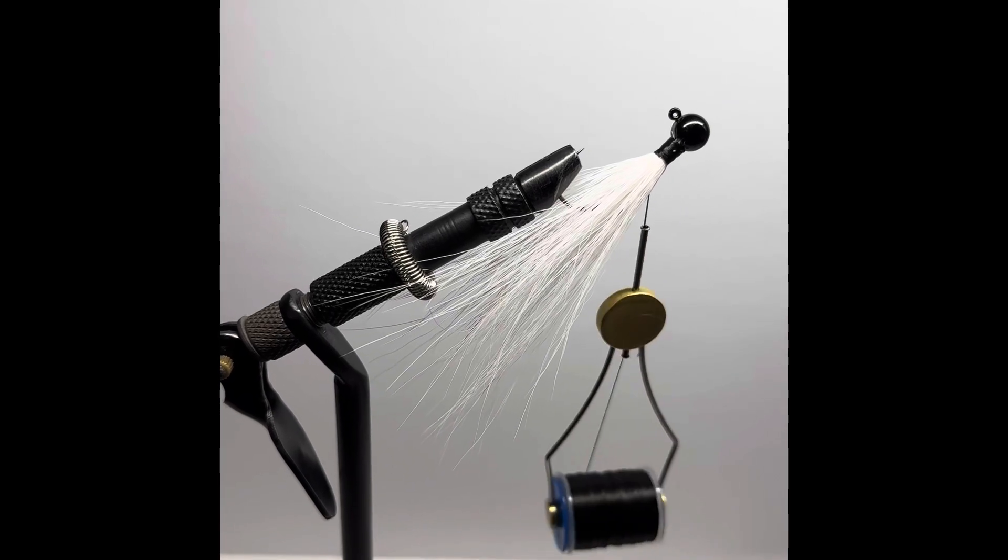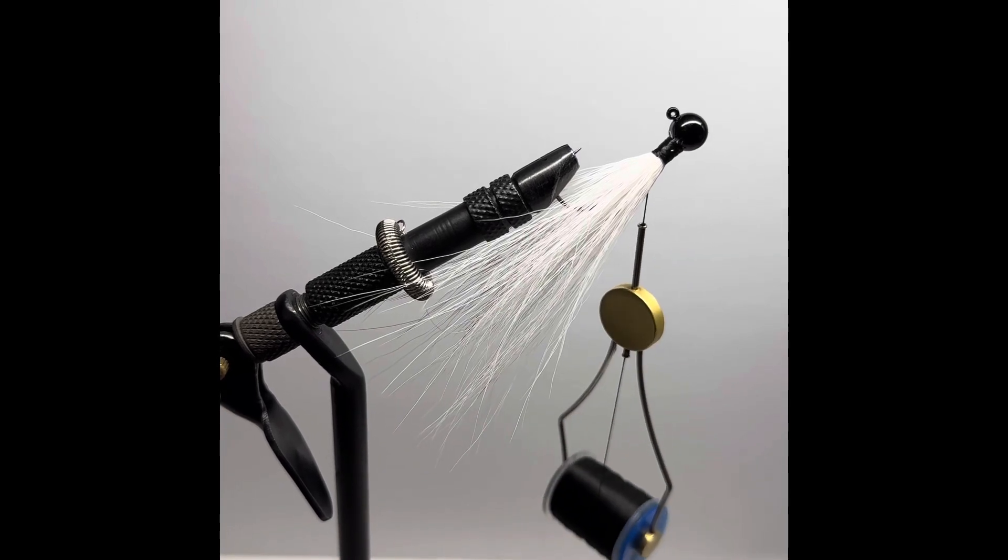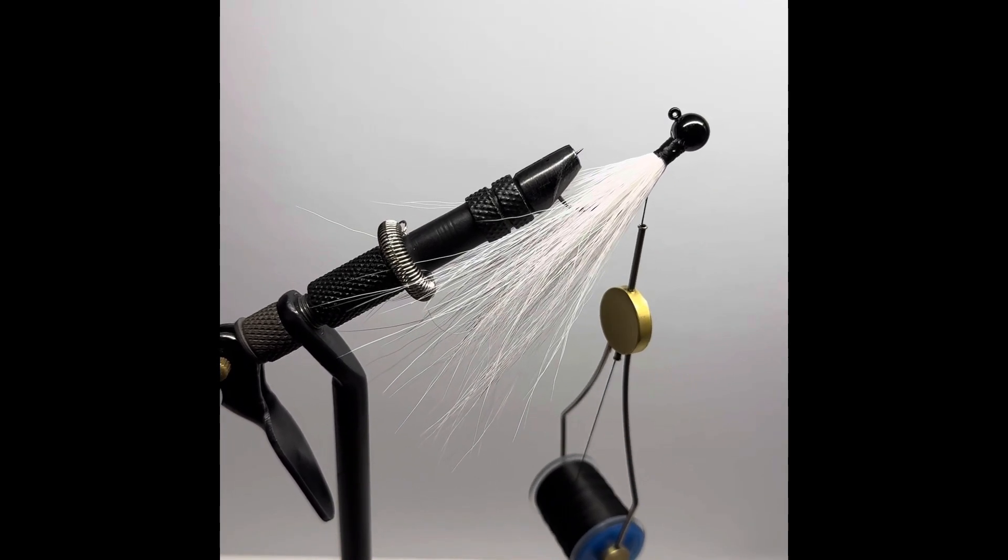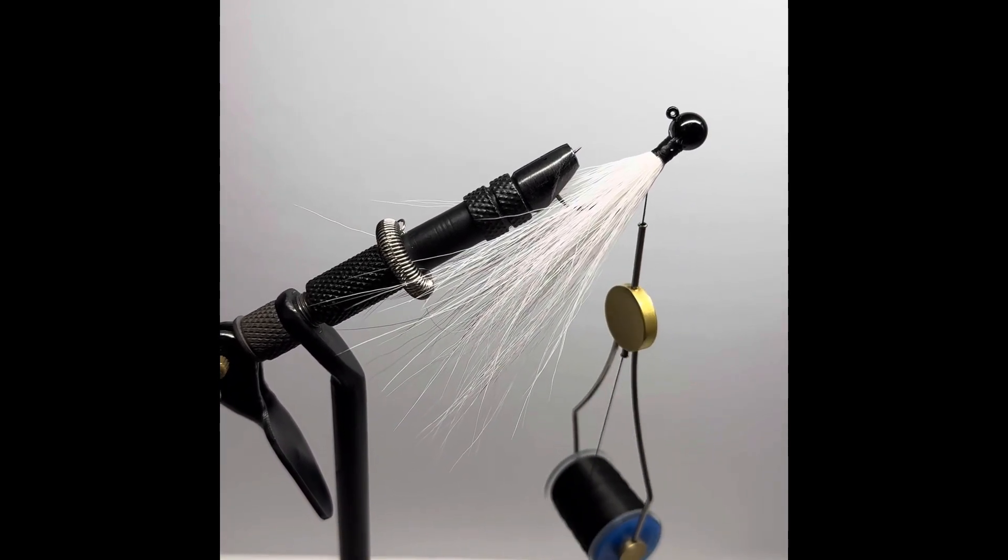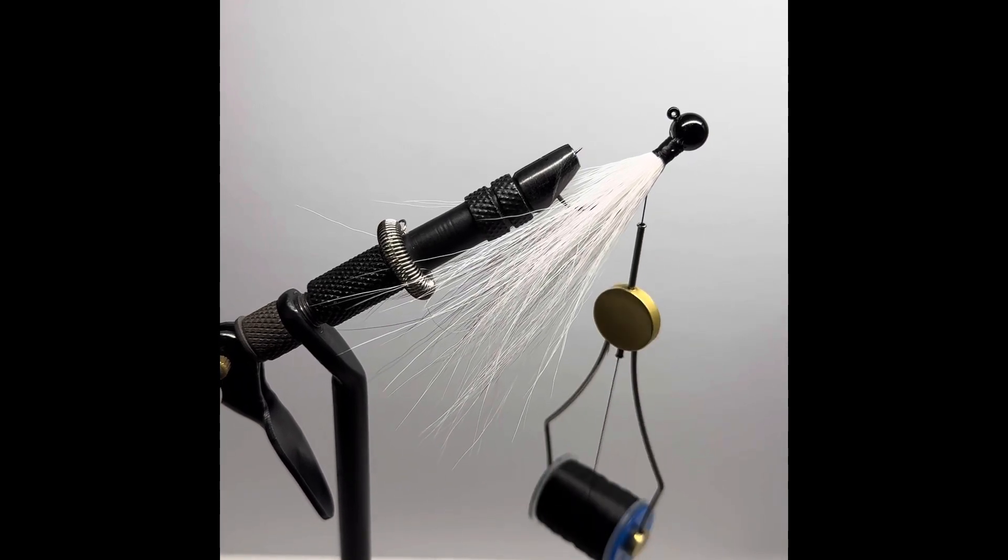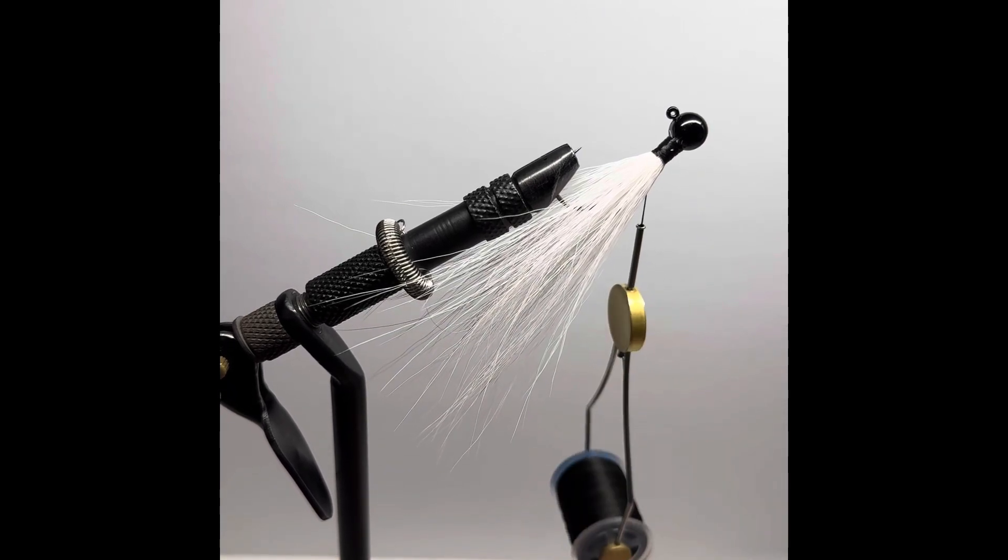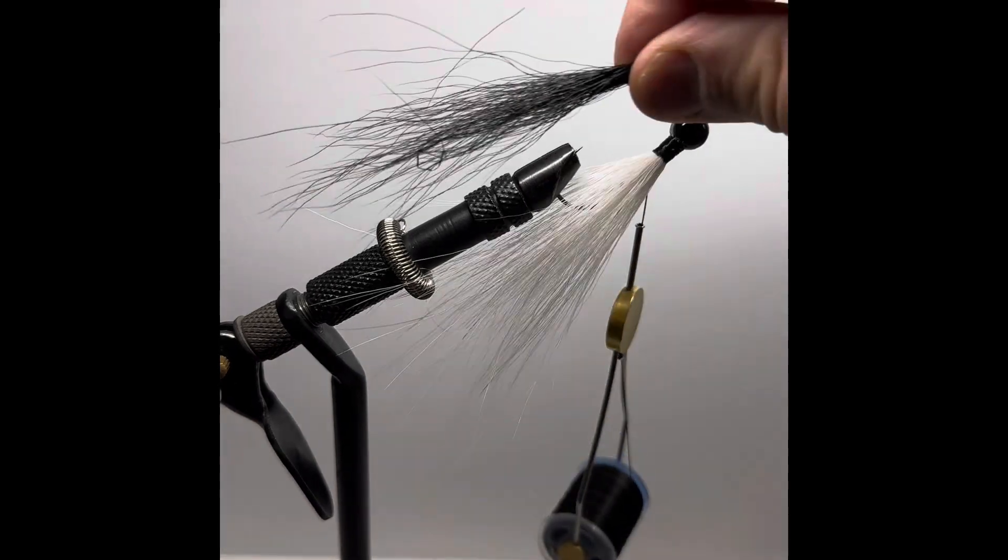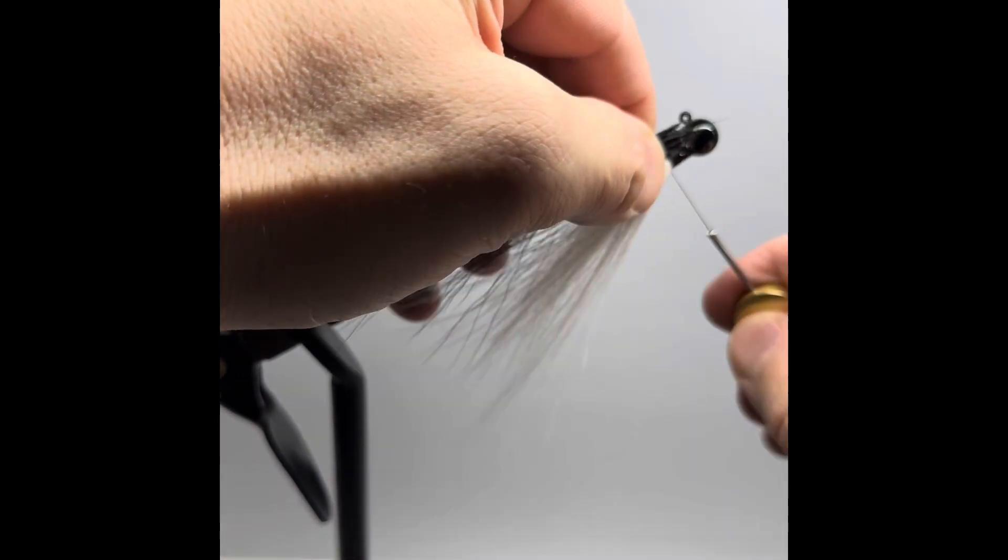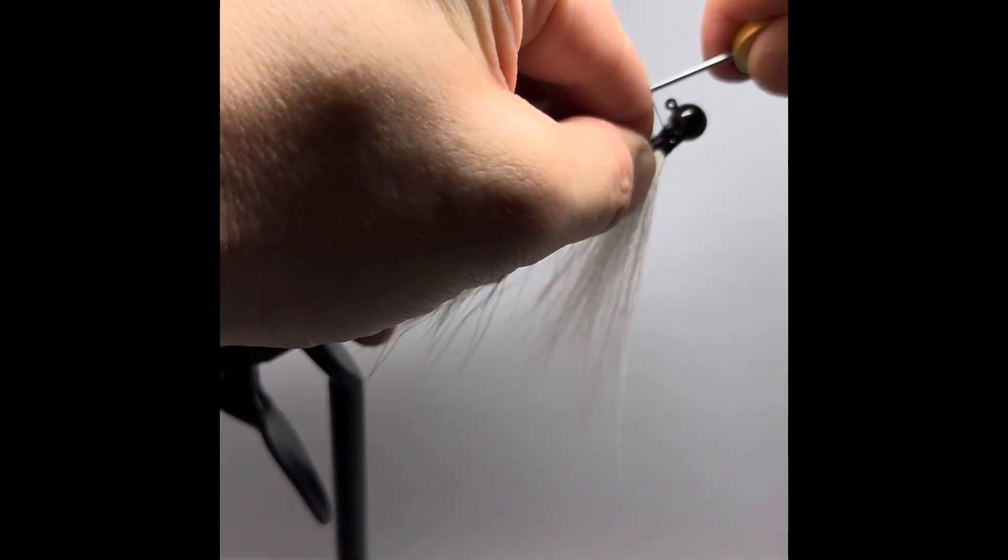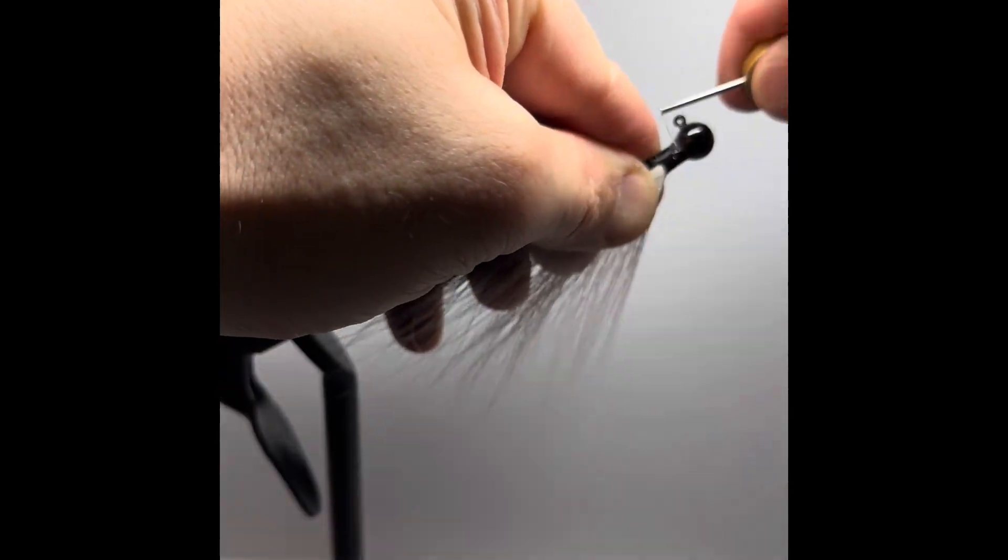We're going to add a black line to mimic that shad like color. Cut off a piece of black bucktail and then fanning it out to get rid of those guard hairs again. Then we're going to kind of measure it up. And loosely tie it in, get it kind of positioned where we want it, and then lock it into place.